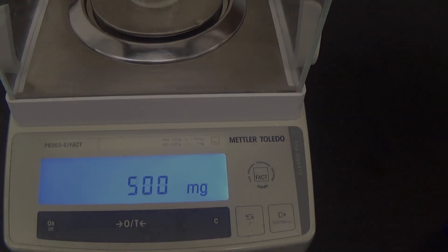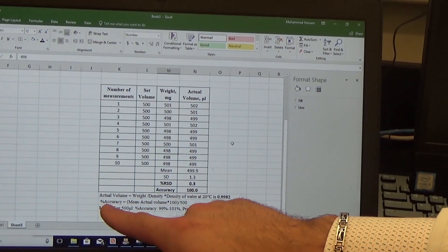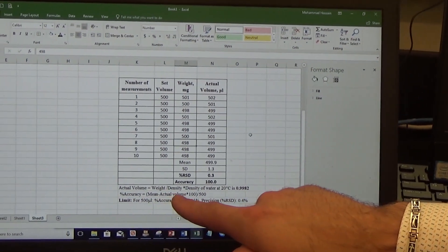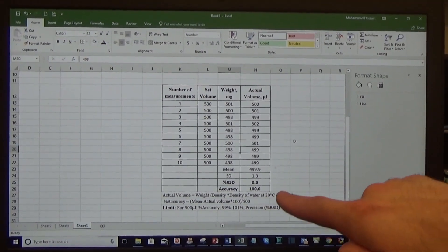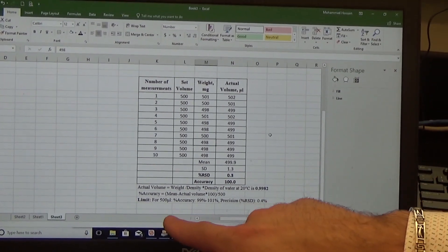We have the micropipette set for 500 microliters. Using the density of water, we calculated the actual volume, then calculated the accuracy and precision using Microsoft Excel. For this specific micropipette use, this is the acceptance limit.